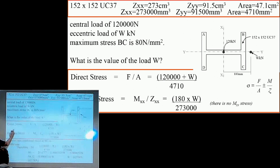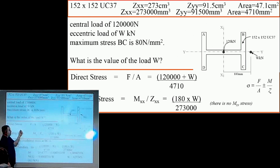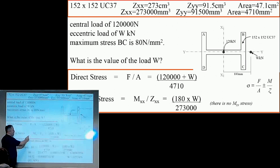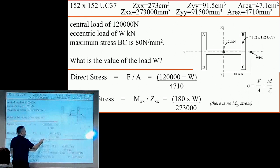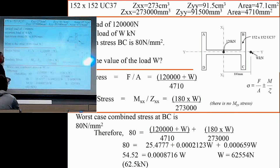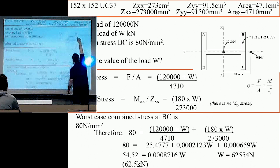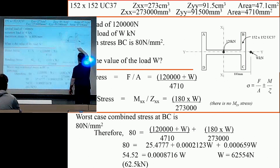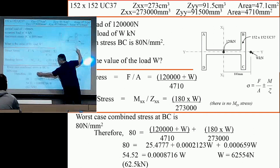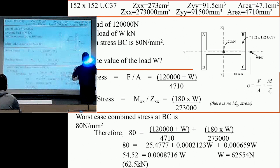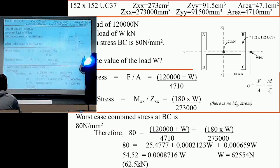In terms of the bending stress, we don't have any bending stress for the 120 because it's in the middle. So therefore, we haven't got an M over Z for the 120. But for the W, our M is W times by 180, divided by our ZXX. So the question was, if the stress along here is 80 N/mm², what is our W? And you've just got to make sure that you get your positives and negatives right when you're adding together your direct stress and your bending stress.